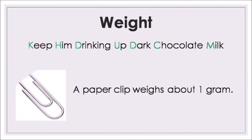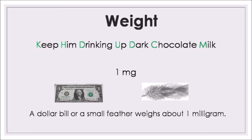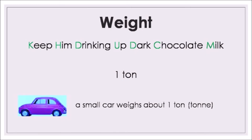A paper clip weighs about one gram — the normal paper clip you use is about one gram. One milligram is even smaller: a dollar bill or a small feather weighs about one milligram, so that's practically nothing — like cotton. One ton is 1,000 kilograms — a small car weighs about one ton.